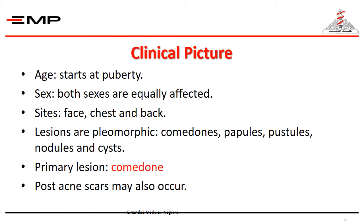Acne lesions are found on the face, the upper part of the chest, the upper part of the back, and sometimes the shoulders. Lesions are pleomorphic, including comedones, papules, pustules, nodules, and cysts. Residual post-acne scars may eventually occur.